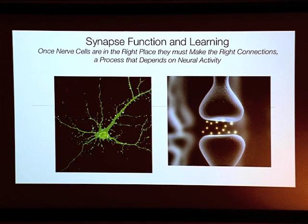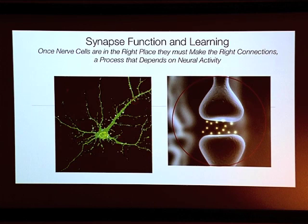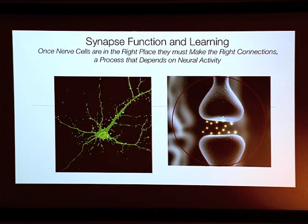After migration is finished and neurons are in the right place, they have to make the right connections. Here's a picture of a nerve cell with little dots on it — these are called synapses, the connections between nerve cells. Information flows from one cell to the other across this gap called a synapse. There are about 100 billion nerve cells in the brain with more than a trillion connections. Nerve cells can make hundreds or thousands, sometimes hundreds of thousands of connections. Like us, they tend to strengthen the connections they use the most. The protein that astrotactin is interacting with has to do with eliminating synapses — with turning them over.